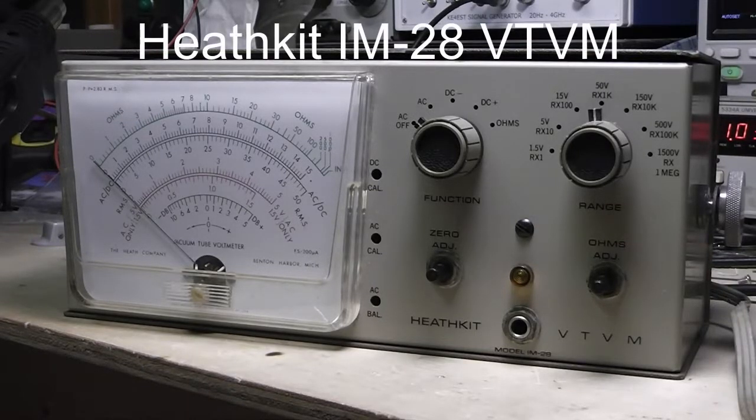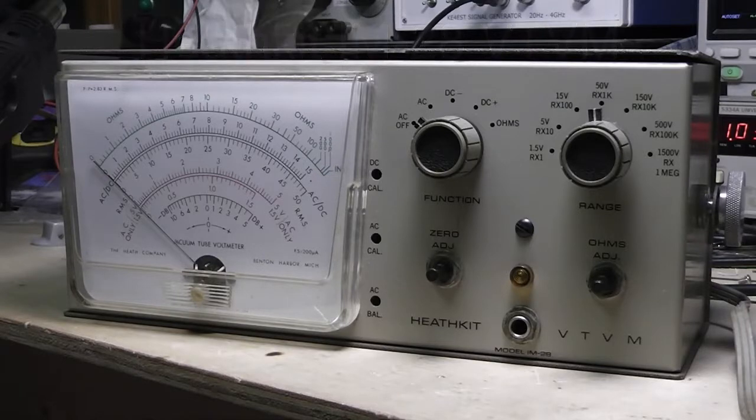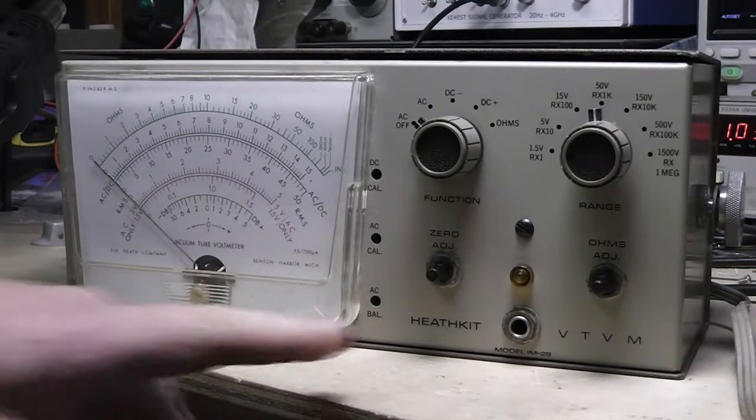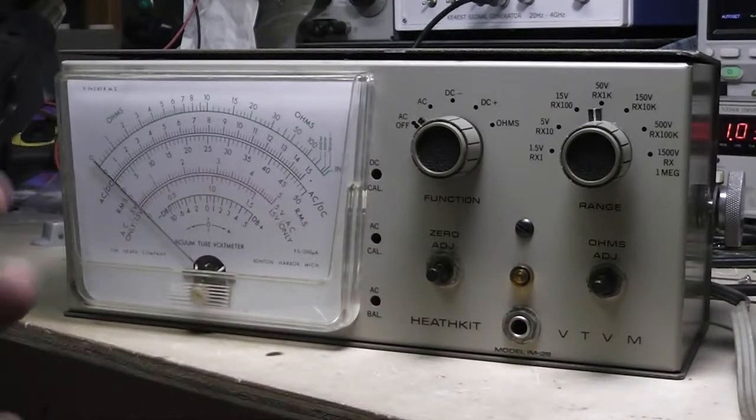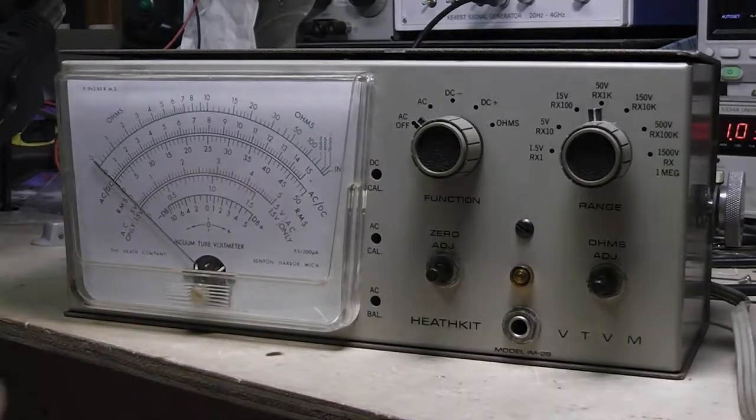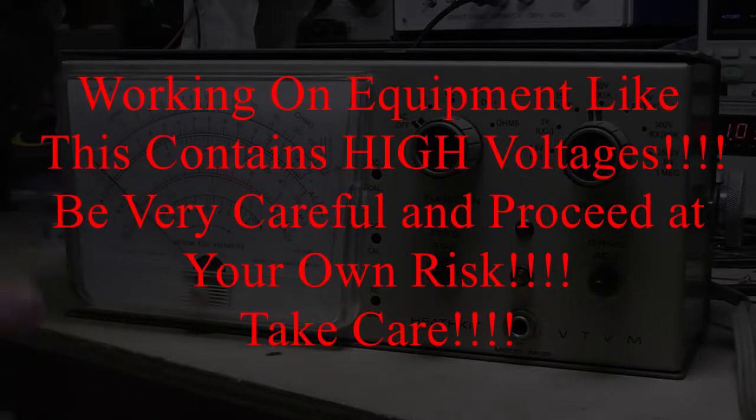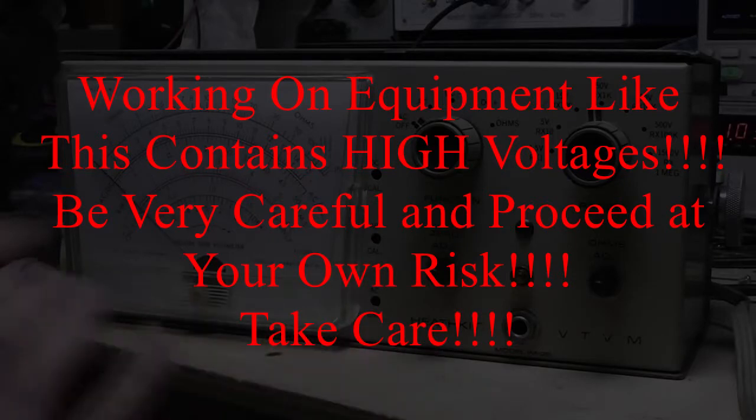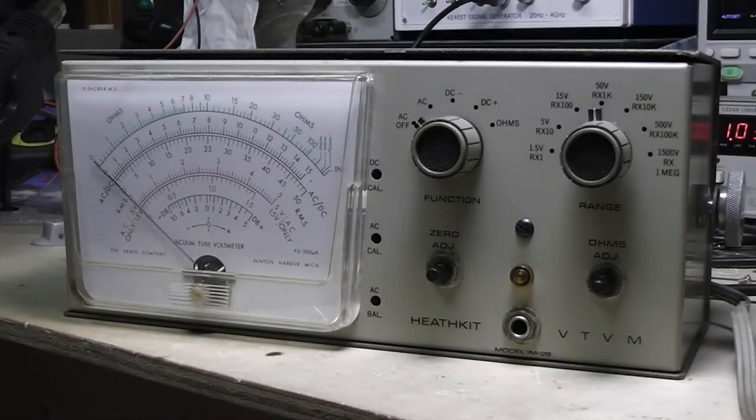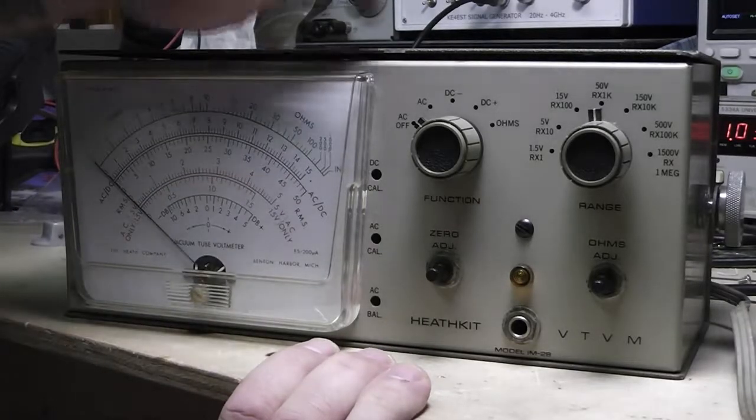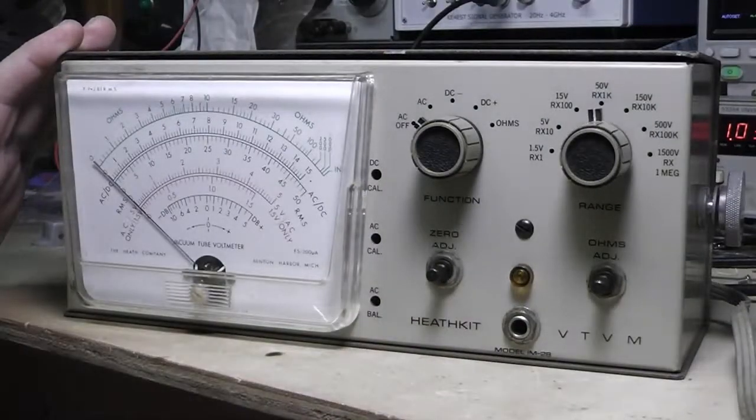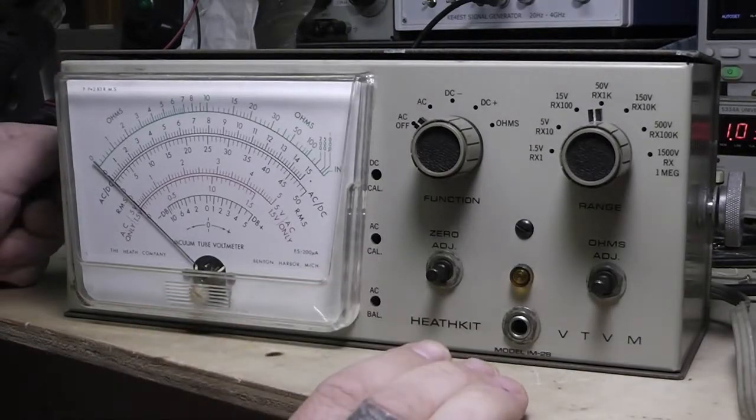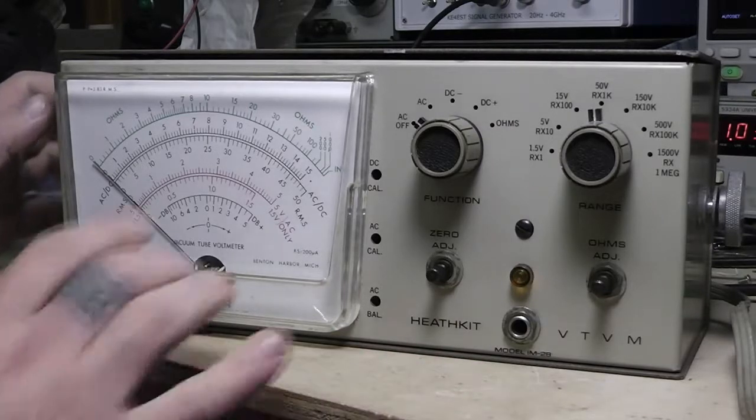Hello again everybody, this is Michael KE4EST. Today we're gonna have a look at this Heathkit model IM-28 vacuum tube voltmeter. Got this in a couple days ago. A lot of times I'll shoot this initial video a few weeks ahead before I go through the rest of the restore process, because like a kid I'm always curious to see what's inside this thing.